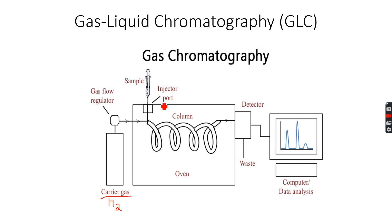Whenever we have a mixture of volatile liquids or gases, we can use gas liquid chromatography to separate them. We get similar retention time graphs as in HPLC, so the rules of retention time graphs all apply to this one as well.